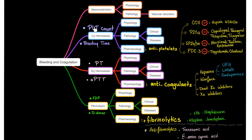If you want to inhibit primary hemostasis, use a class of medication known as antiplatelets — they have four subcategories: cyclooxygenase inhibitors such as aspirin; P2Y12 inhibitors such as clopidogrel; GP2B3A inhibitors such as abciximab; and PDE3 (phosphodiesterase 3) inhibitors such as dipyridamole.